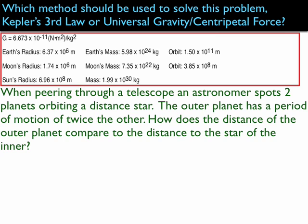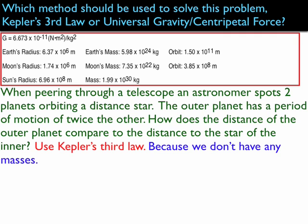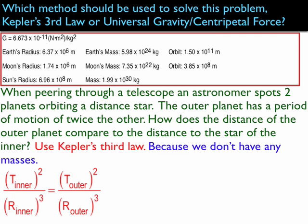So, I'll set up my ratio. T squared to the inner divided by R cubed to the inner equals T squared to the outer divided by R cubed of the outer planet. And then, I'll put in whatever numbers I know, but I know this ratio. I know that one is double the other, so the outer planet's period is double the inner planet's period.